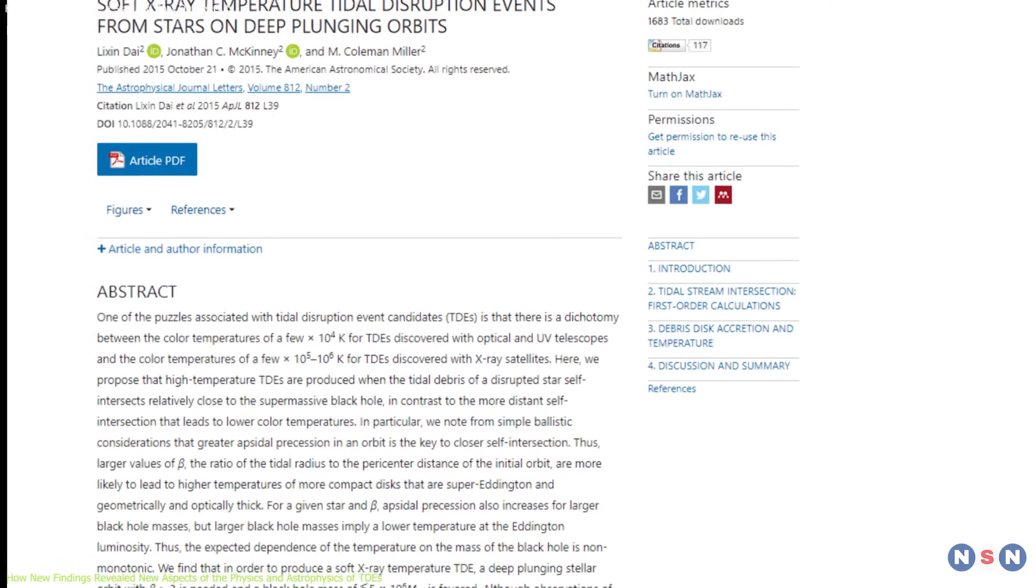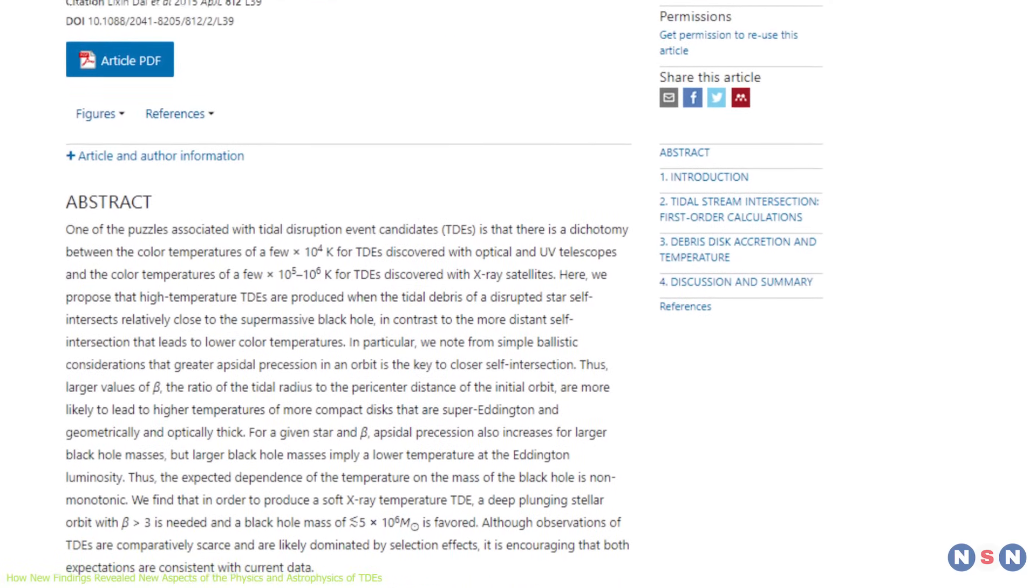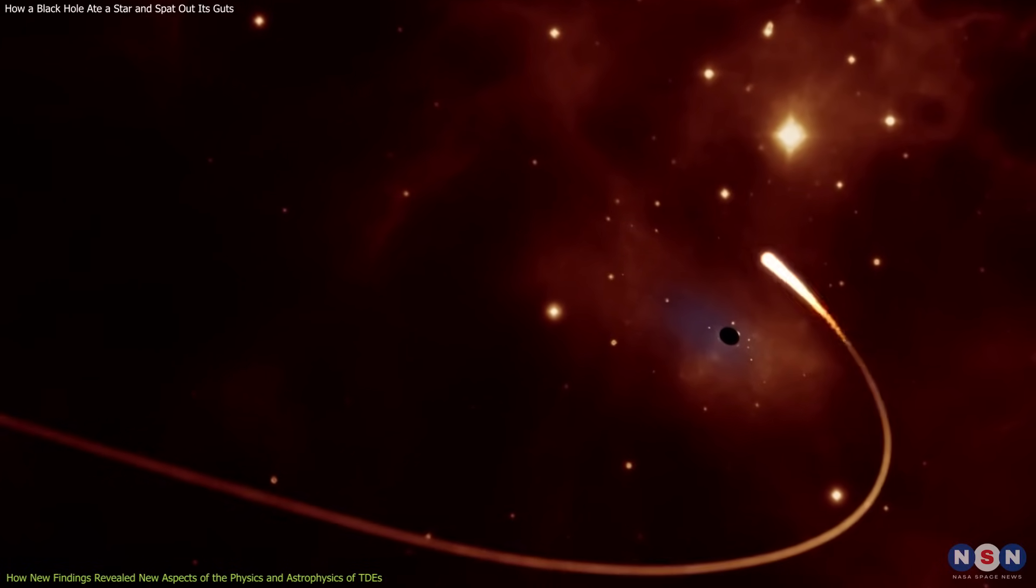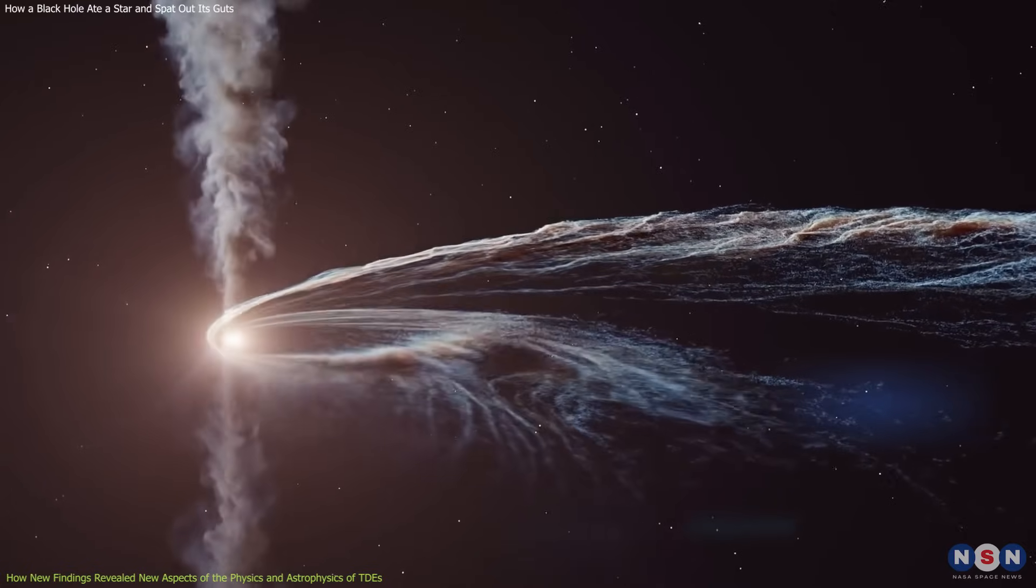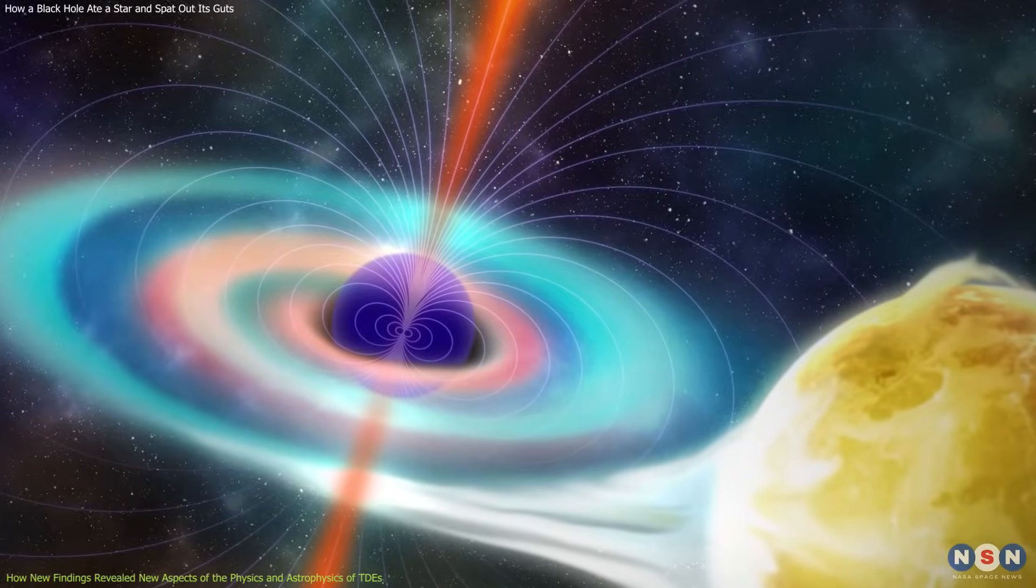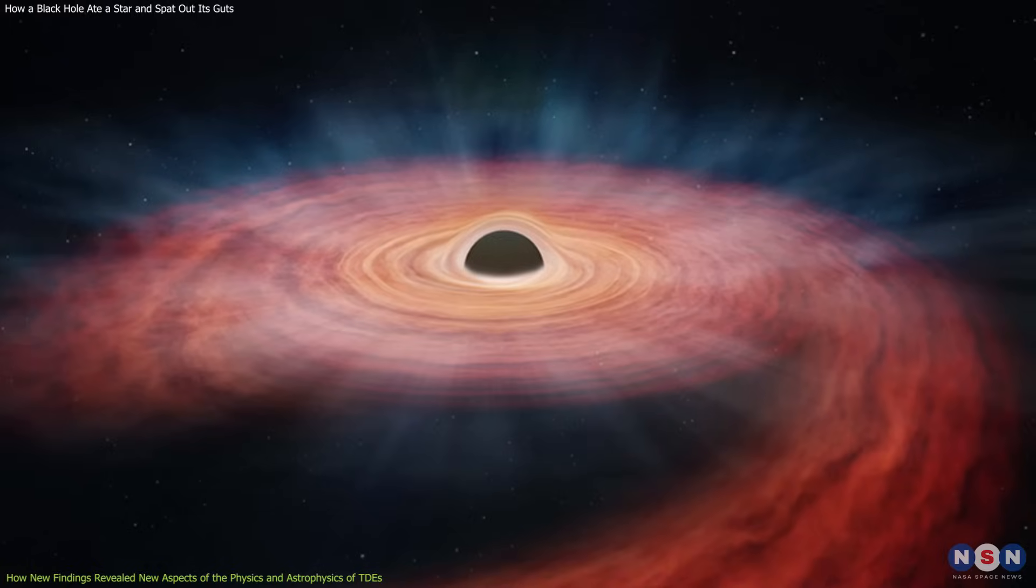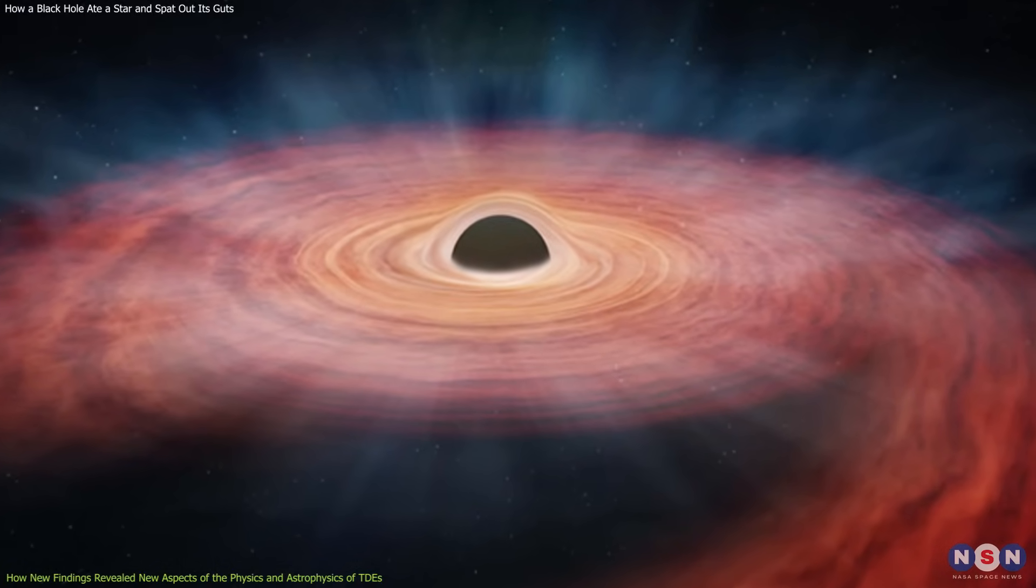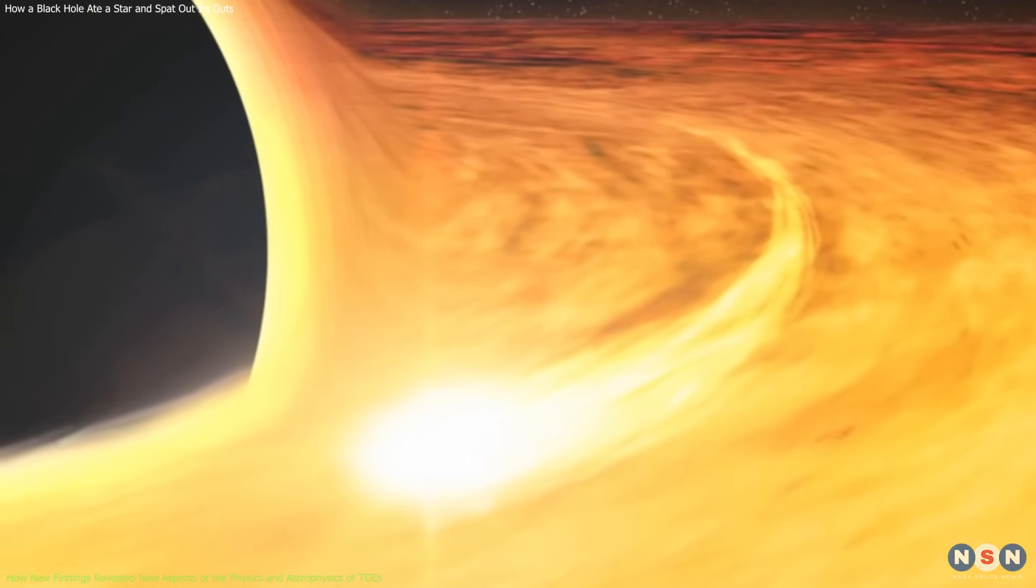A third study by Dye used radio observations to probe the environment around the black hole and the star. They found that the star was likely orbiting in a dense gas disk before it was disrupted, and that the disk was disrupted by the tidal forces as well. They also found that the radio emission from the event was fading faster than expected, which could indicate that the ejected material was interacting with a strong magnetic field near the black hole. This is the first time that such a detailed picture of the pre- and post-disruption environment has been obtained for a TDE, and it could reveal new aspects of the physics and astrophysics of these events.